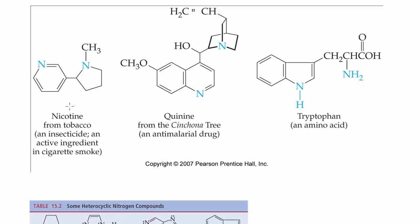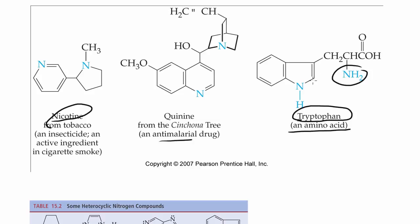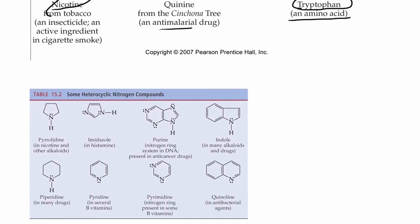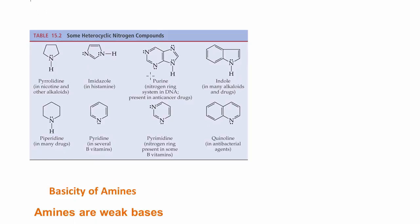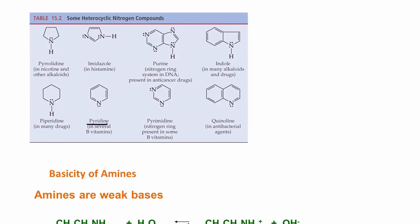Here are some amines. One of them is nicotine — we see these are amine compounds with this heterocyclic ring containing a nitrogen. Quinine is an anti-malarial drug and also an amine compound. And tryptophan — I think you've all heard of tryptophan — this is an amino acid. We'll be looking at these later, but here we see the amino groups. Some other heterocyclic nitrogen compounds include quinoline, indole, pyridine, and several others, but you see they all have that nitrogen and they all have rings.